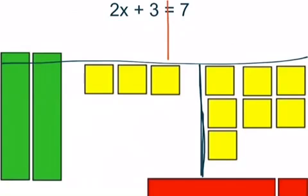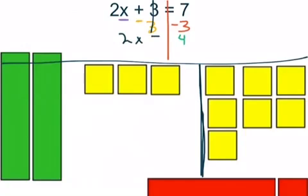When we solve for x, we want to isolate the x part — get it by itself on the left side. We start with the value not attached to x, which is plus 3. We do the opposite of adding 3, which is to subtract 3. We know 3 minus 3 gives us 0. But what we do to the left side, we have to do to the right side as well. So we subtract 3 from both sides, and 7 minus 3 gives us 4. So we should have 2x equals 4.